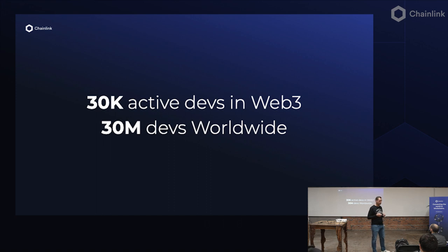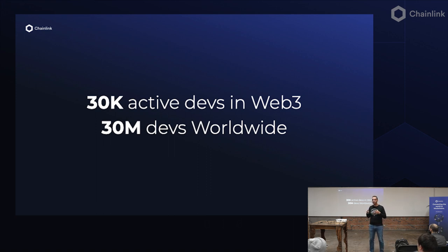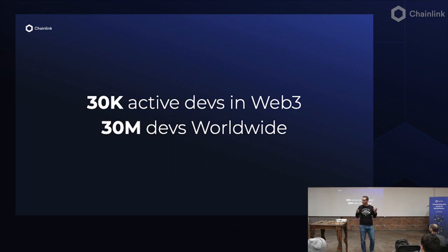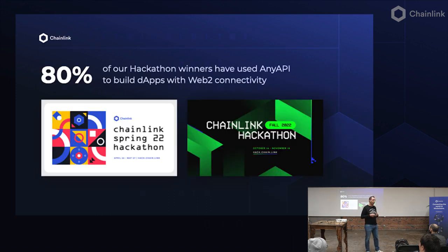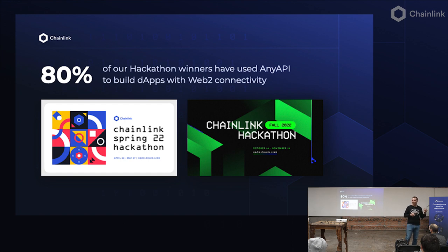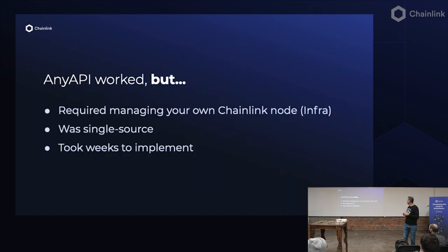There are 30,000 active developers in Web3 who are limited because their smart contract can't leverage the power of Web2 APIs. There are 30 million developers out there who are inspired by the promise of Web3 but don't know how to get started — they don't want to reinvent the wheel, they have tools they're already building with. Four out of five hackathon winners have been using any API, so we got a clue there. Any API kind of worked, but to what Patrick was saying, it was just a lot of work, single source, and ultimately took way too much time.